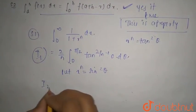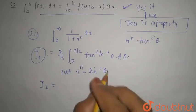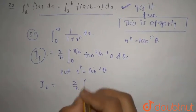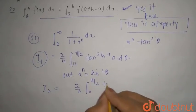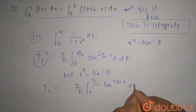Now when you talk about I₂, you just put x^n is equal to sin square theta. So this will be 2 by n, 0 to pi by 2, tan 2 by n minus 1 d theta again.